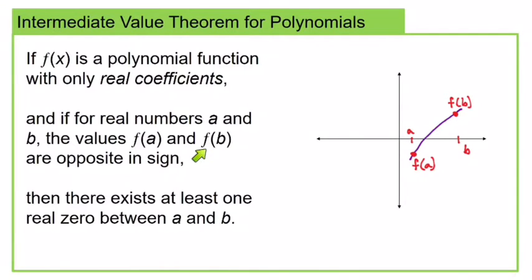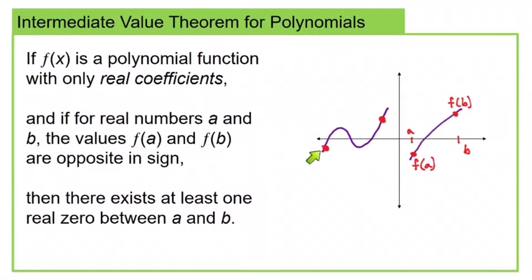The theorem says that if the function values have a change in sign, there exists at least one real zero between a and b — there could be more than one zero. Take a look at this function: I'll mark an a and b so that f(a) is negative and f(b) is positive, but this time there are three x-intercepts. So there doesn't have to be just one; there can be more. But if there's a change in sign, you're guaranteed at least one.